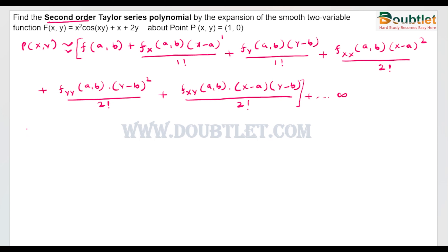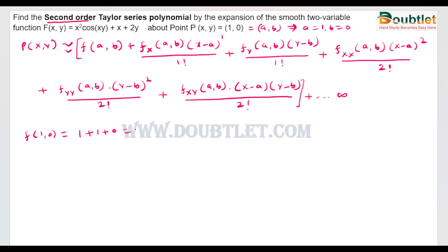We know that a = 1 and b = 0. First, we find the value of the function at (1, 0). Putting x = 1 and y = 0, cos(0) becomes 1, so we get 1 + 1 + 0, which equals 2. So f(1, 0) = 2.